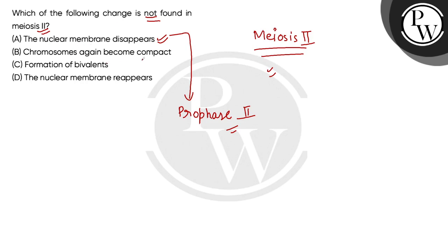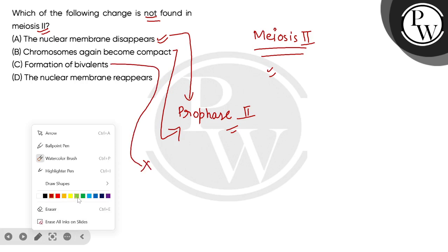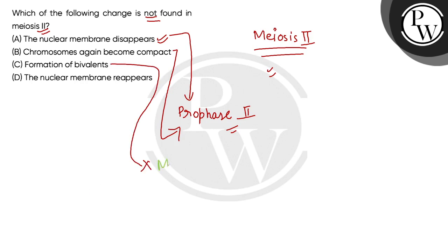This happens in meiosis 2. You can see both meiosis 1 and 2. When you are in prophase stage, particularly zygotein, bivalent formation is visible. This statement is wrong regarding meiosis 2.